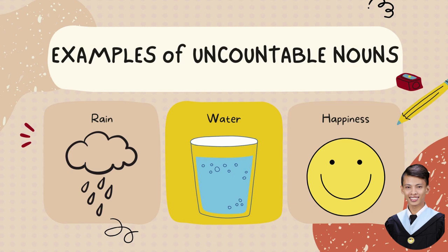Happiness is also uncountable because you cannot count happiness — you cannot say 'I have three happiness.' Uncountable nouns also refer to substances like paper, coal, and wood; liquids like water and rain; and abstract ideas like happiness, time, information, and a lot more.